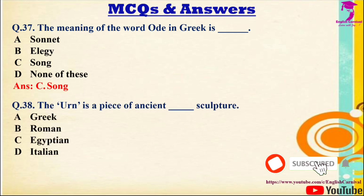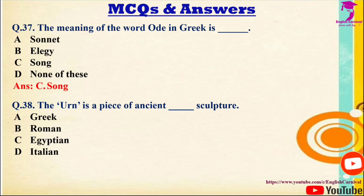Question 38: The urn is a piece of ancient — sculpture. Options: A) Greek, B) Roman, C) Egyptian, D) — The correct answer is A — Greek.